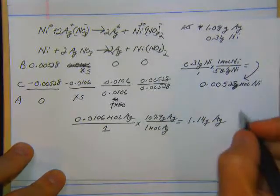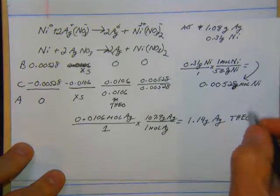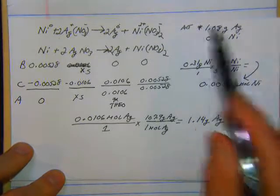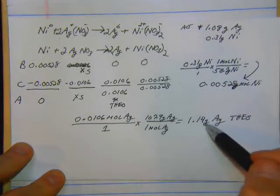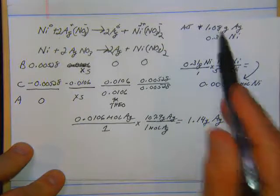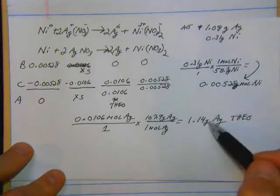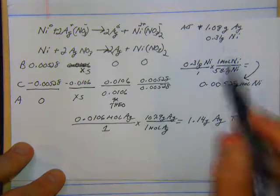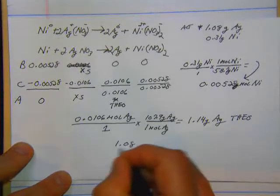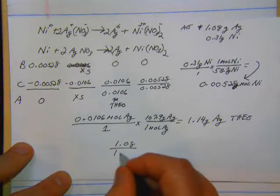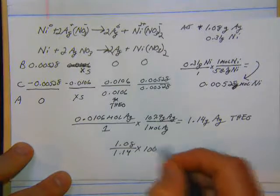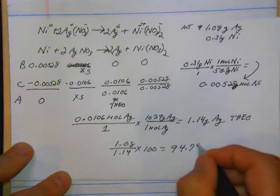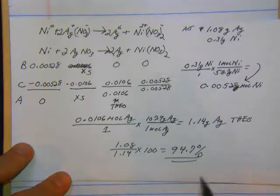Here is our actual. In all honesty, the actual should always be less than the theoretical. If you came out with this bigger number than the theoretical, you probably did something wrong. But we want percent yield. That's pretty easy to find. Take our actual, 1.08 divided by theoretical, 1.14 times 100. And that comes out to about 94.7%. So there's our percent yield.